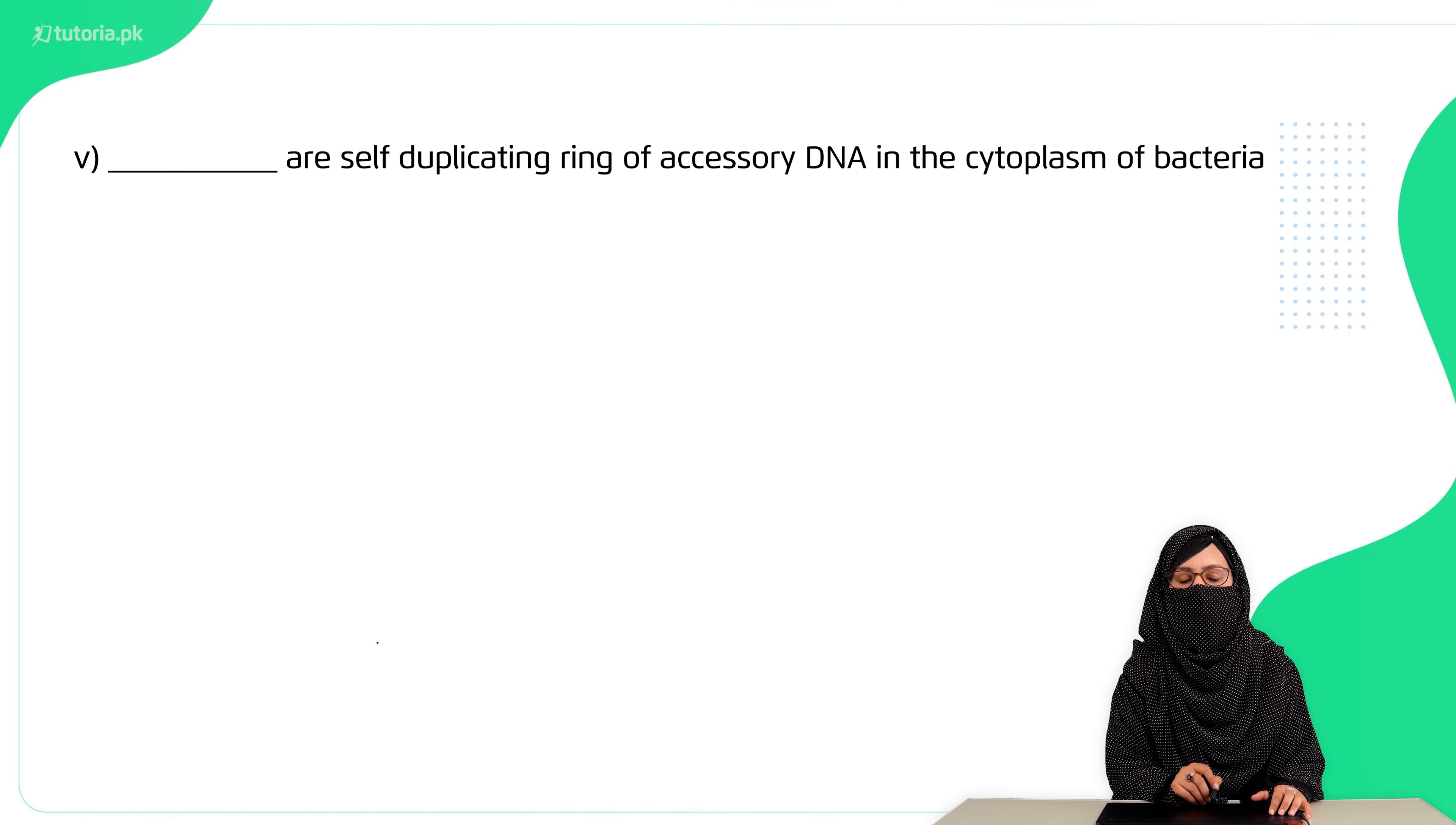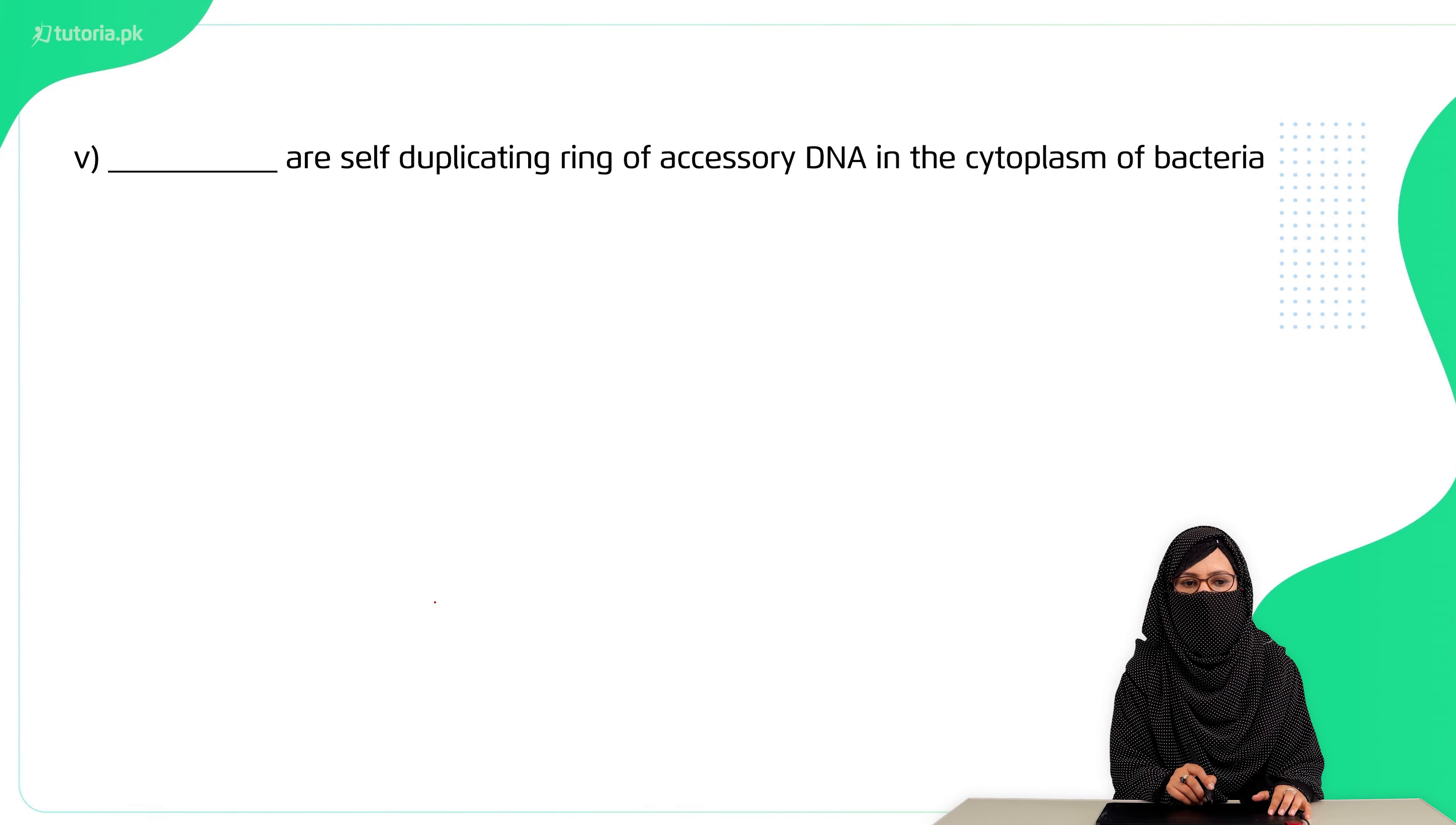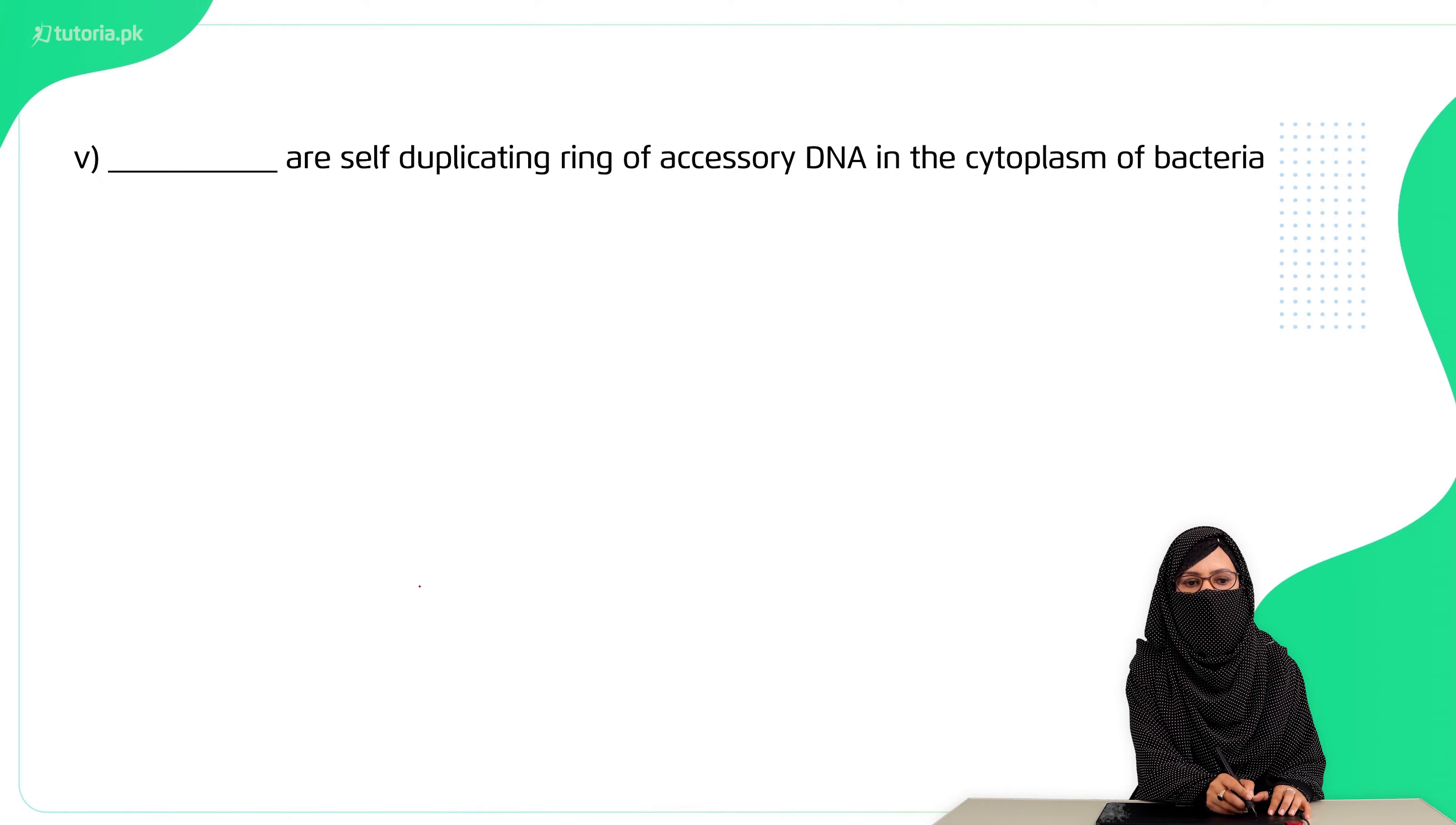Blank are the self-duplicating rings of accessory DNA in the cytoplasm of bacteria. The answer is plasmid.